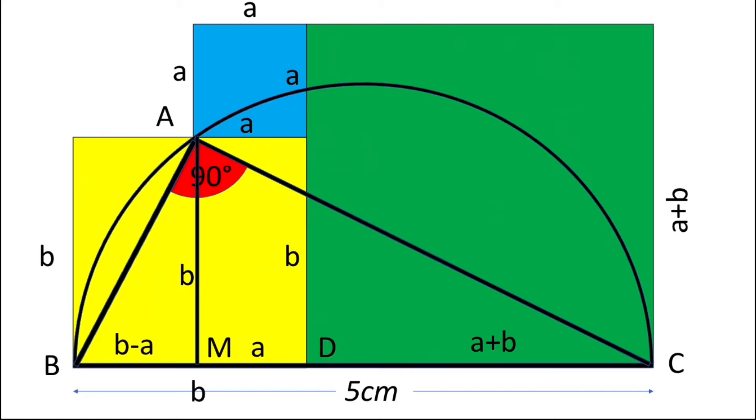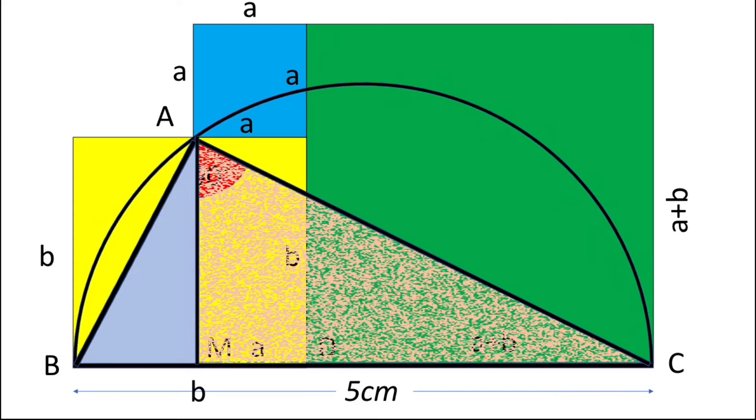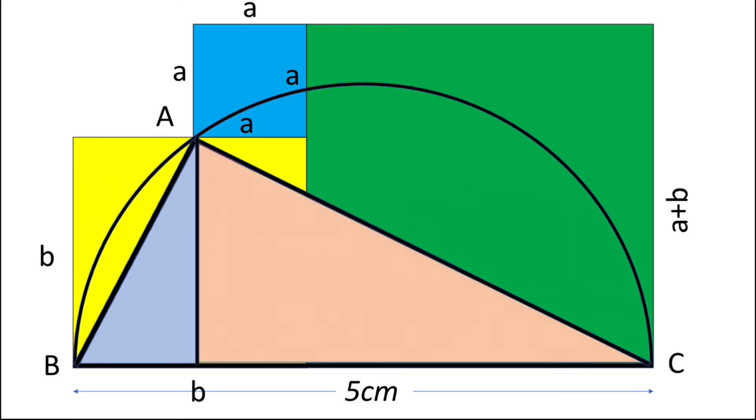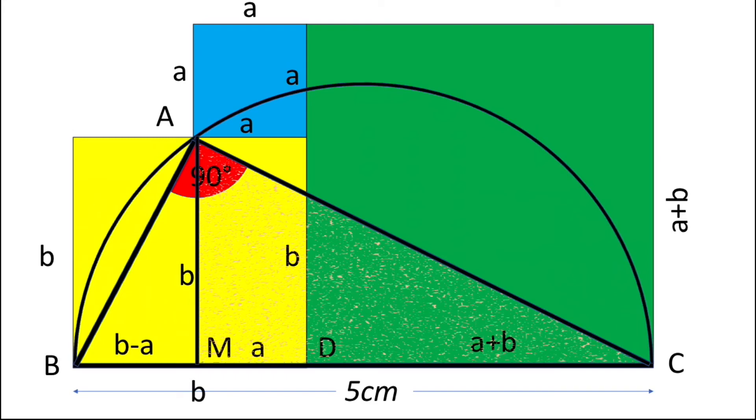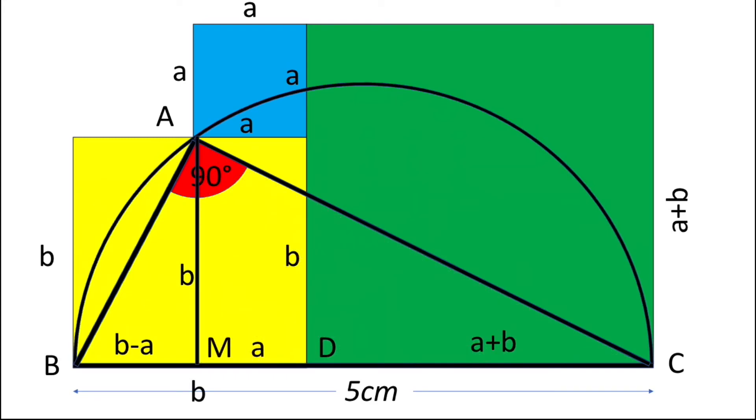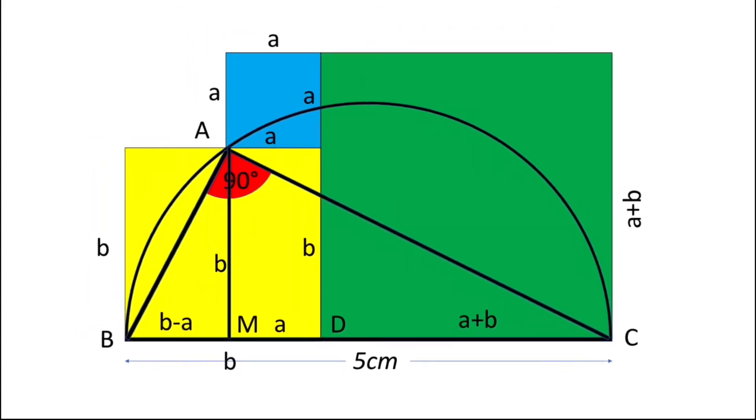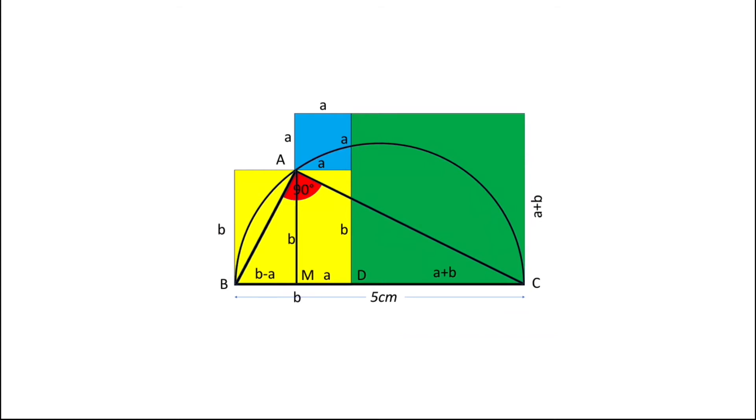Now let's take triangle AMB and AMC. These two triangles are similar, so we can use the property of similar triangles that is the ratio of sides should be equal. So let's write: we can write AM over CM should be equal to BM over AM.